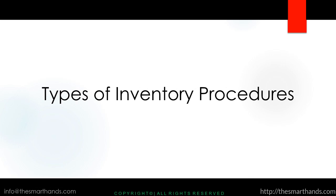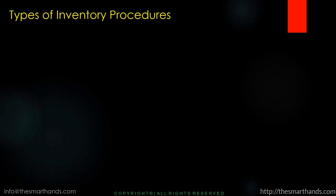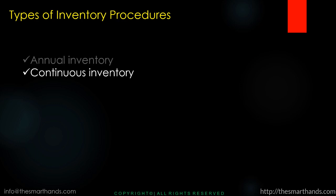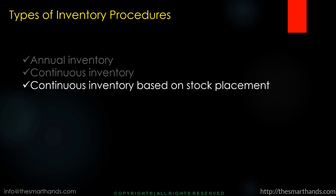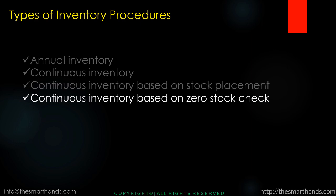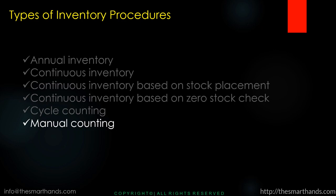Now we'll discuss the types of inventory procedures. The first one is annual inventory. Then we have continuous inventory, continuous inventory based on stock placement, continuous inventory based on zero stock check, cycle counting, and the last one is manual counting. We're going to learn about all of these in this course, and I'll show you how each one really works in the SAP system in the next videos.